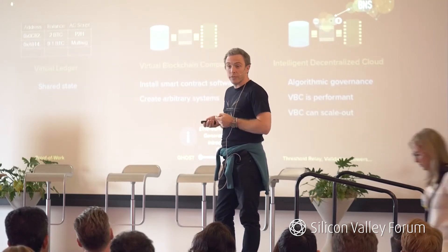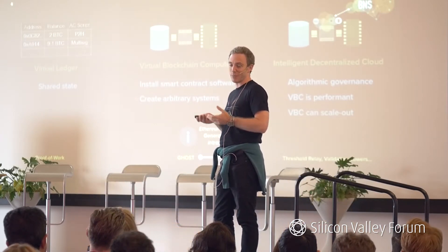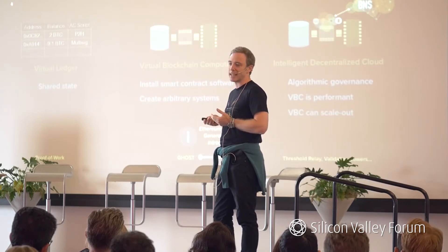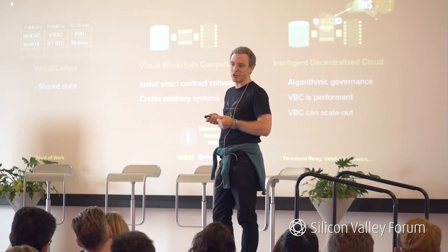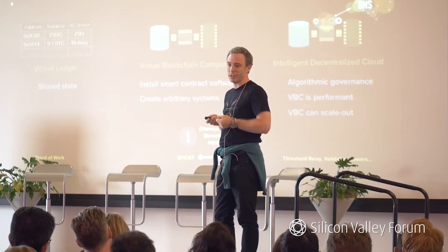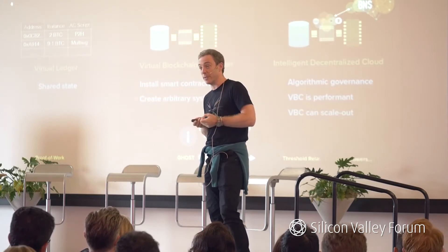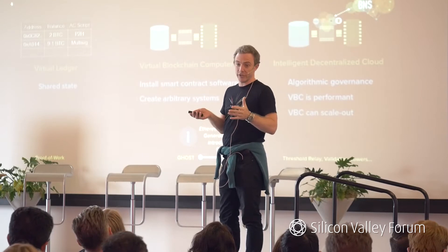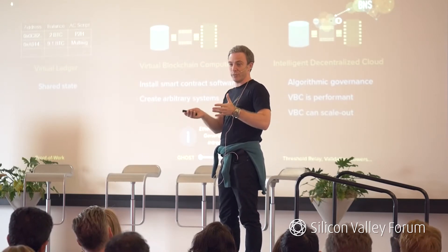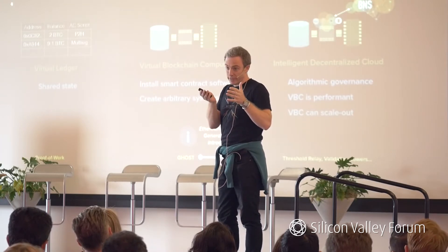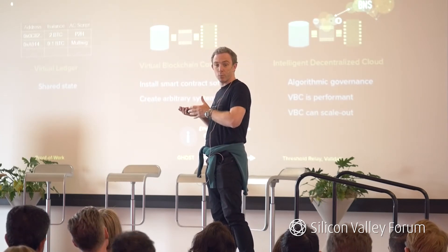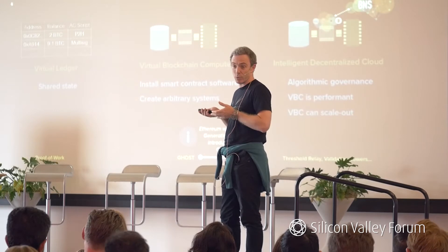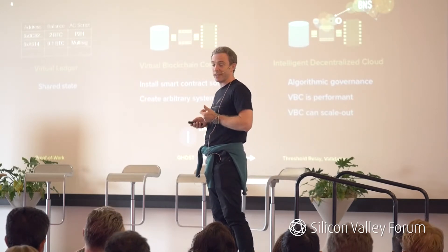Then in 2015 we had the launch of Ethereum, which you may have heard about. People who invested in the original crowd sale at around 25 cents are now seeing tokens trading at over $200 — we're on the way to a 1,000x multiple in two years. Incredible growth, and that's one reason people are so excited. But the technology is also very interesting. It was a big advance on Bitcoin: whereas Bitcoin was just a shared virtual ledger, Ethereum moved us to a shared virtual computer — what I call a blockchain computer. A blockchain computer is much more powerful than a spreadsheet. Now you can upload software, which we call smart contracts, and using these you can create arbitrary systems.